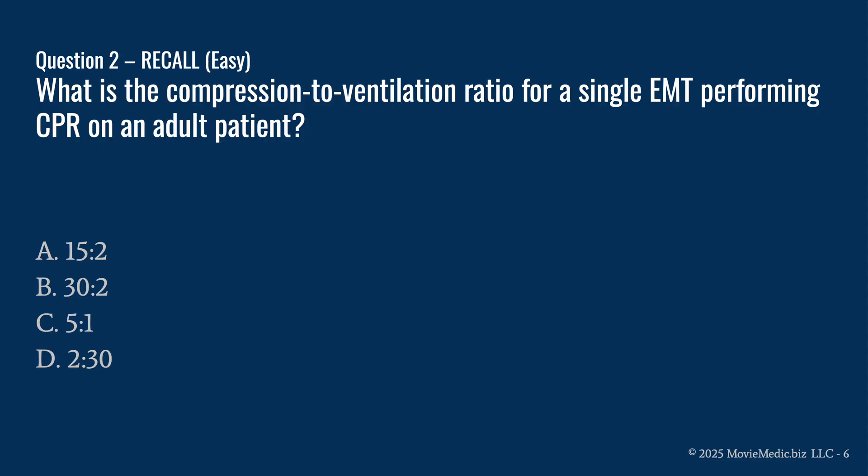Question two. What is the compression to ventilation ratio for a single EMT performing CPR on an adult patient? A: 15 to 2. B: 30 to 2. C: 5 to 1. Or D: 2 to 30.